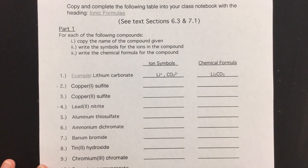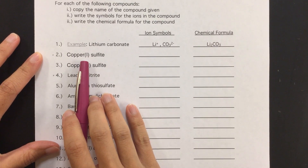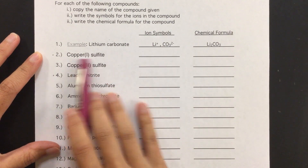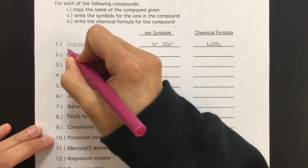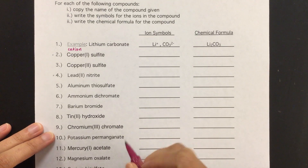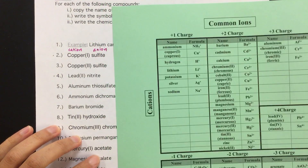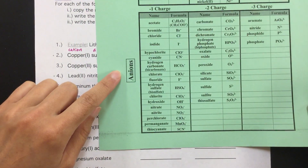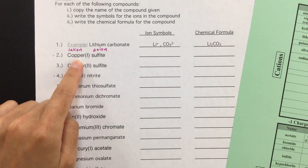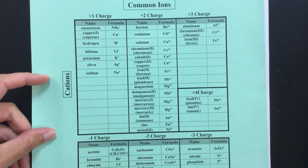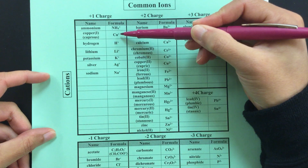In part one, where we are given the compound name, we're going to start with copper one sulfite. Right away we can see how the Roman numerals are used. To write the ion symbols, we're going to take the name and find those ions on our ion list. Remember, the cation — the positively charged ion — is always first, and the anion — the negatively charged ion — is always second. So first we're going to look for copper one in the cation section. Since it has the Roman numeral one, that's a clue to look in the positive one charge section. Copper one has the formula Cu⁺.